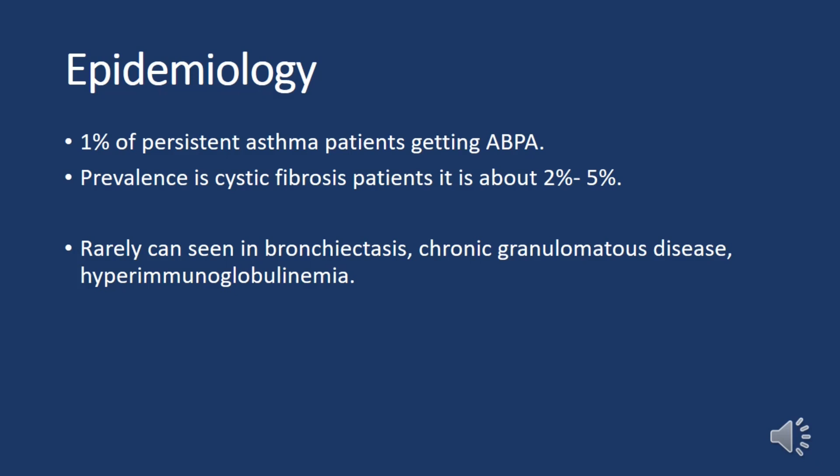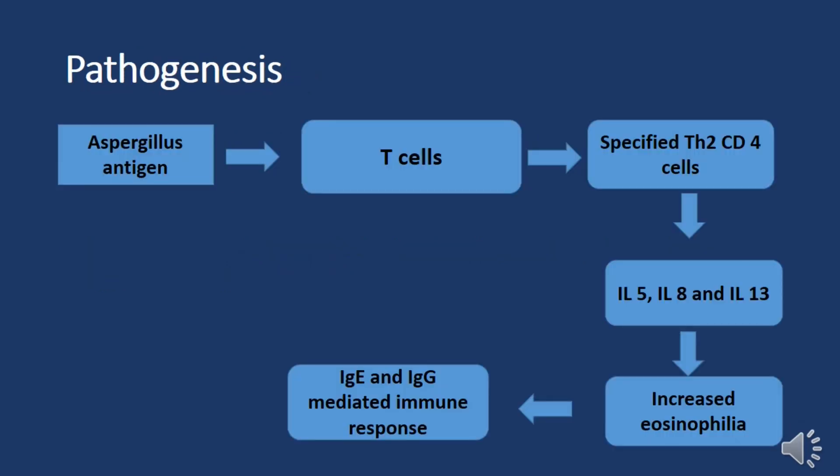Epidemiology: ABPA is an uncommon complication of asthma, with a prevalence of only one percent in persistent asthma patients. In cystic fibrosis, the prevalence is higher at around two to five percent. It is also rarely seen in bronchiectasis, chronic granulomatous disease, and hyperimmunoglobulinemia.